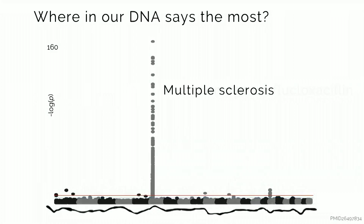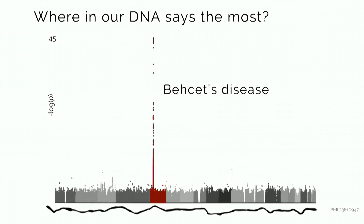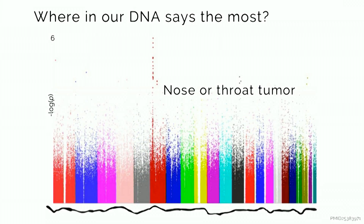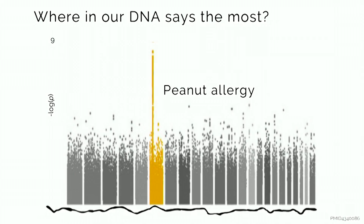Going forward: who gets multiple sclerosis? There's the same peak showing up. And on chromosome 6, if we just keep going forward, we'll see all kinds of different diseases — Behçet's disease, a mystery disease of the Silk Road; narcolepsy — one of our speakers later today has narcolepsy, and it traces to the same part of our genomes; some kinds of tumors; even things like hair loss; and sometimes very important things like peanut allergies. Same part of chromosome 6.